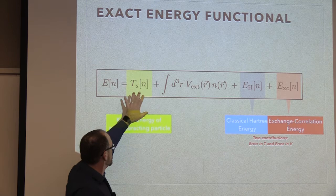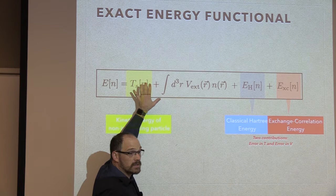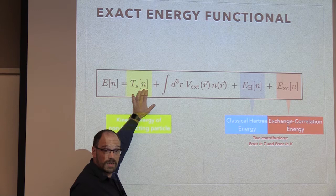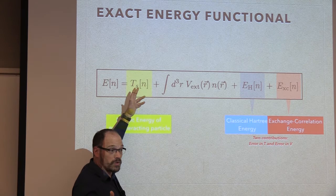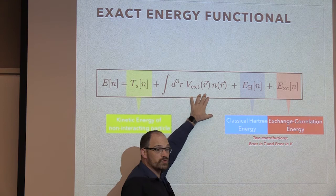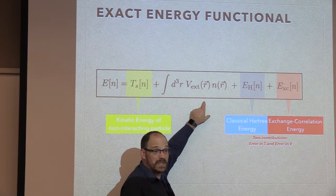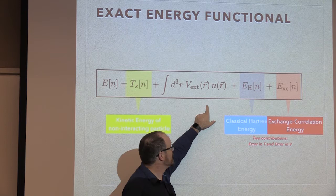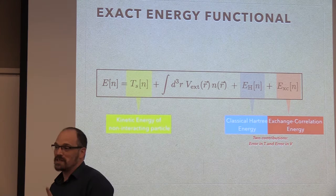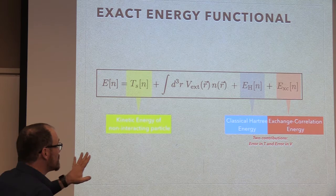The kinetic energy for independent particles is easy to calculate — it's just the Laplacian. The density is just a sum, an integral over all the independent particles, which you can easily do. There will be the external potential, usually called external, which is the potential due to the ions. That one you can write very easily as a functional — it is a local functional, meaning you can write it as a function of the density and nothing else, not the derivative or anything.